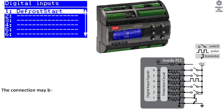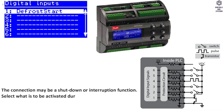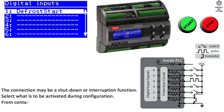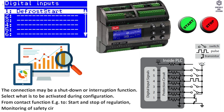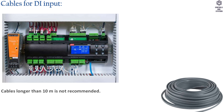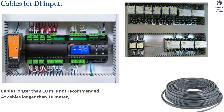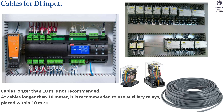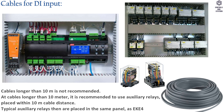Digital inputs: the connection may be a shutdown or interruption function — select what is to be activated during configuration. Contact functions include start and stop of regulation, monitoring of safety circuits, and general alarm function. For DI input cables, cables longer than 10 meters are not recommended. If cables longer than 10 meters are required, it is recommended to use auxiliary relays placed within 10 meters cable distance — typically placed in the same panel as the EKE400.